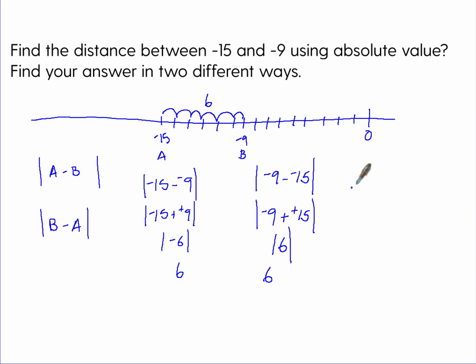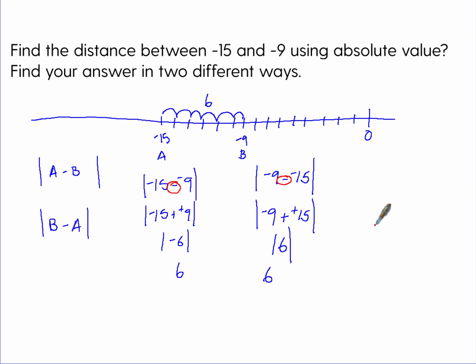Notice you must always have subtraction. Make sure the numbers match up — negative 15 and negative nine, or negative nine and negative 15 — then do the work. And that's how you do absolute value on the GED.